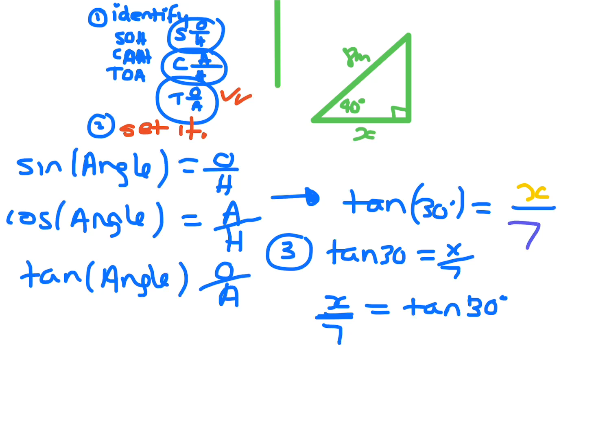Now we need to get X by itself. So to remove the 7 there, you times by 7 on both sides, and the 7 will cancel out. So then you get X equals 7 times tan 30. And then you just need to place that in your calculator to find the side length.